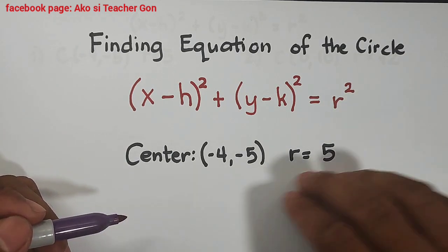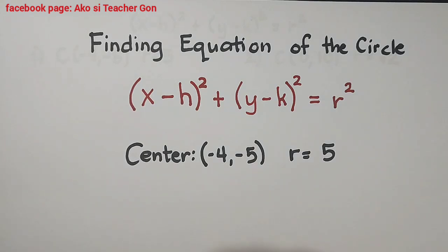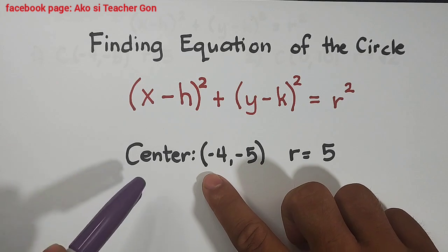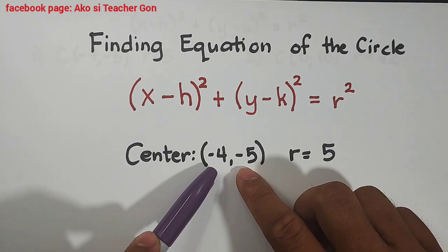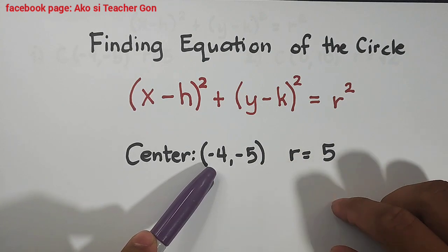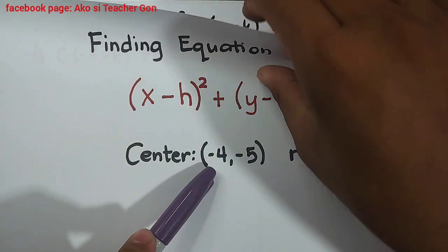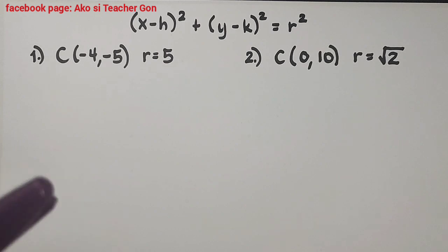What we have here is that we need to find the equation of the circle if the center of the circle is (-4, -5) and r is equal to 5. So let's try this problem.